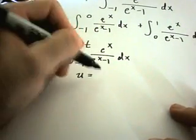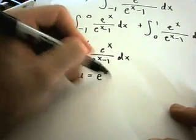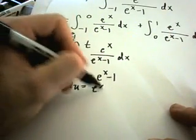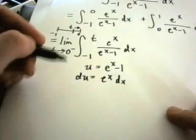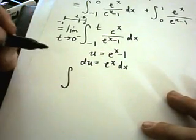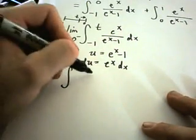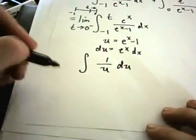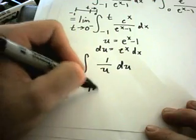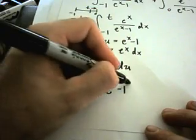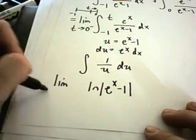If we do a substitution on this problem to integrate, if we let u be e to the x, du will be e to the x dx. So really what I'm integrating is 1 over u du. If I calculate the anti-derivative of that, I'll get ln of u, but u is e to the x minus 1.